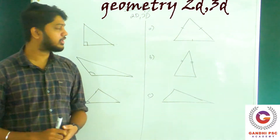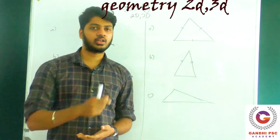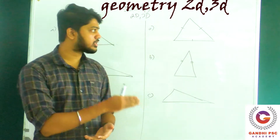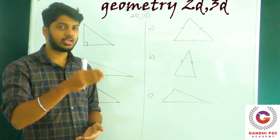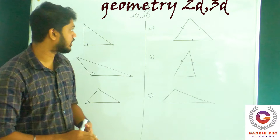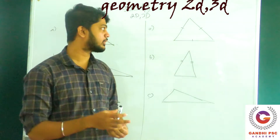2D shapes include triangles, quadrilaterals, trapezius, and their sides. Let's talk about 2D shapes and 3D shapes.